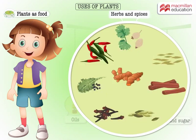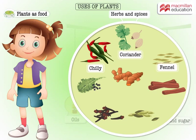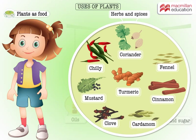Herbs and spices that make our food tasty are plant products. Chili, coriander, fennel, mustard, turmeric, cinnamon, cloves, and cardamom are used to make our food tastier.